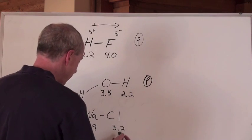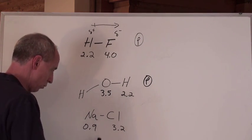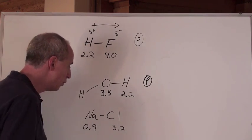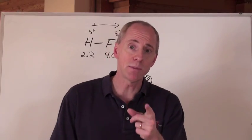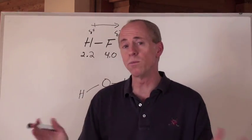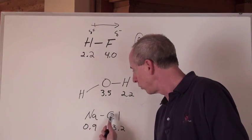Na-Cl: you look at that difference, and that difference in electronegativity is huge. It's about 2.3. That's a difference. And when you get past, again, that about 1.8 or so, 1.9...